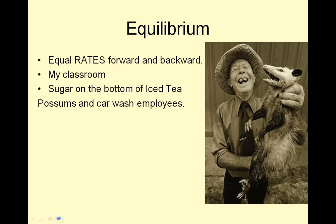Equilibrium means equal rates forward and backward. In my classroom, first hour I have 24 people. Bell rings, 24 people leave, 24 different people come in. As 24 people go out, 24 people come in, and if you just took pictures of my room every now and then, it looks like there were always 24 people. But if you look closely, there are 24 different people.